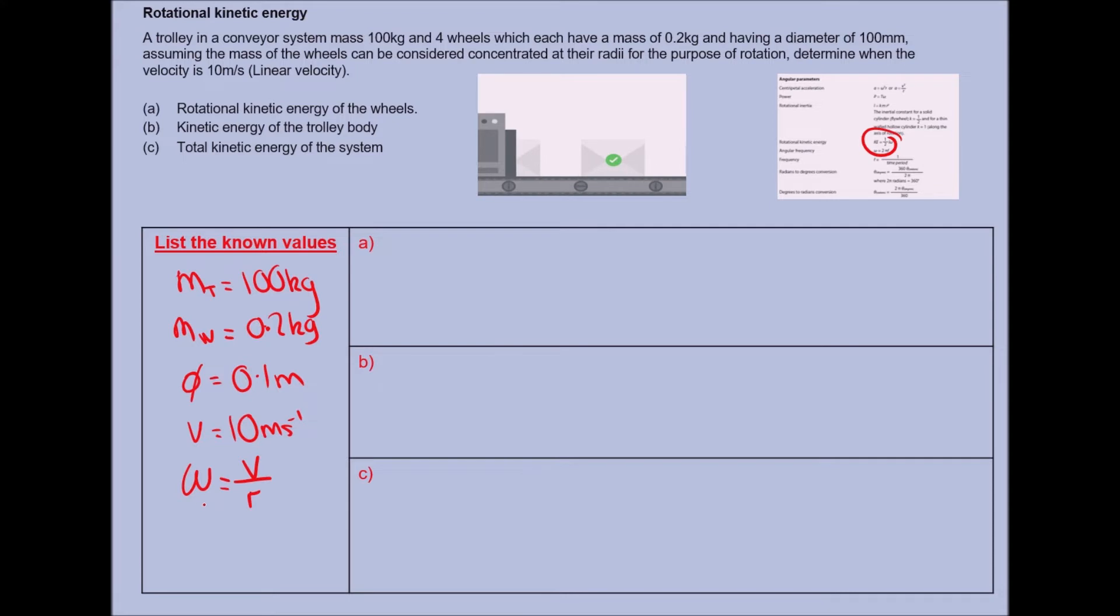For this case, we've got our linear velocity and we can get our radius. The angular velocity is equal to the linear velocity divided by the radius of the object spinning. The wheels are spinning, so it's half my diameter, which is 0.05. So my angular velocity is going to be equal to 200 radians per second.